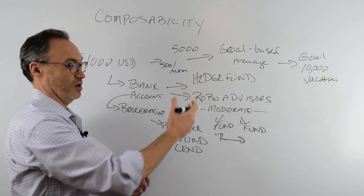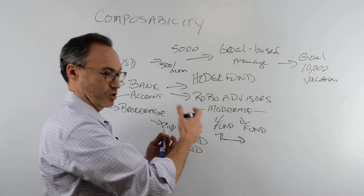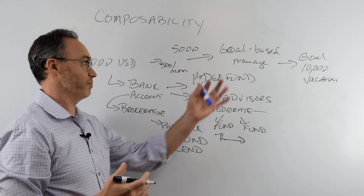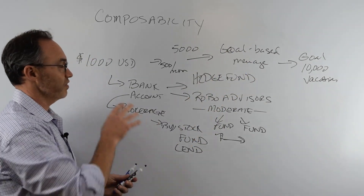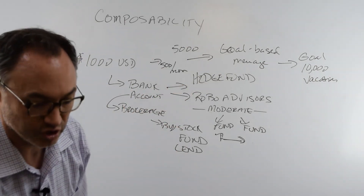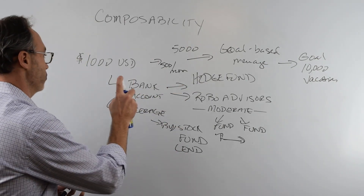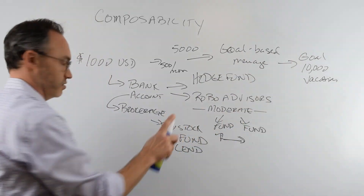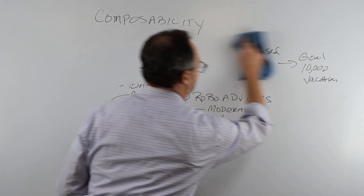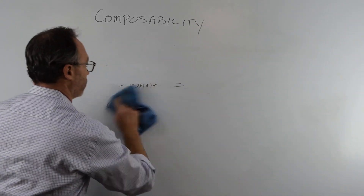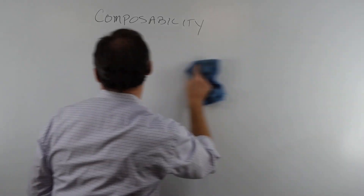This still doesn't allow me to use any of this as collateral, and it's custodied elsewhere. That's how things kind of work in the traditional world. In the decentralized world, composability is the ability to layer a protocol on top of protocol, or protocol on top of app.